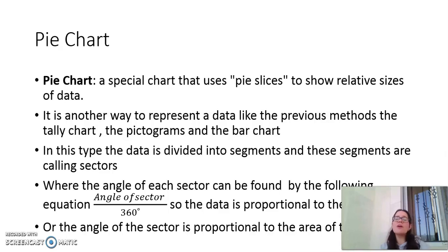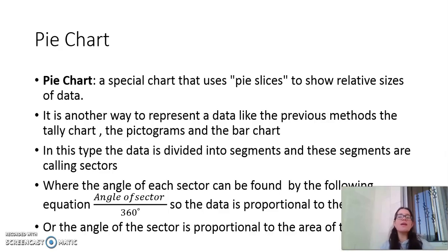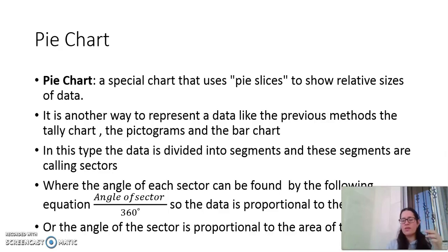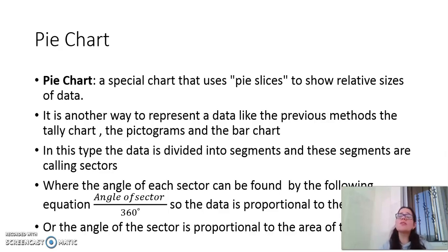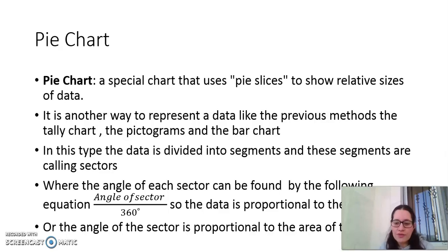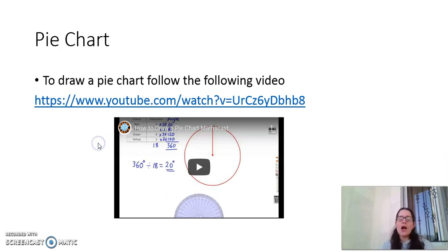In this type of data representation, the data will be divided into segments. Each segment is a sector where the angle of the sector can be found by the following equation: angle of the sector divided by 360, since the data is proportional to the sector area. We choose 360 because it represents a full circle — each sector is a part of a 360-degree circle.